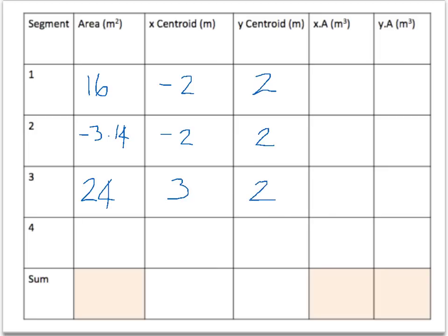Segment 4 was the rectangle, I mean the triangle, so our area is going to be 8m squared. The X centroid was 7.33m, and the Y centroid was 1.33m.